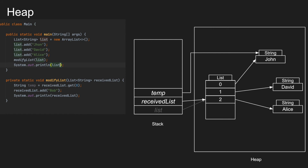On the next line, we are adding the new string 'Bob' to the receiveList. Whenever we use the new operator, a new object will be created, which will be added at index three of the list. Executing the next line, System.out.println will print all the contents of the list.